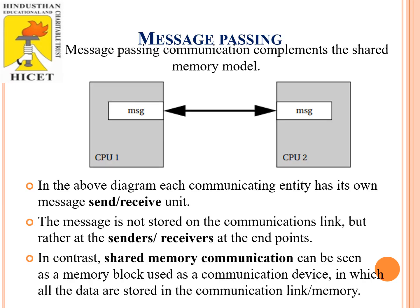Coming to the next style, that is message passing. Here, the communication complements the shared memory model. There are two different processes, process one and process two, with no intermediate between them — that is, there is no standard shared location. The proper message model is implemented on the processor itself, with two different units: a send unit and a receive unit. The message is not stored on the communication link but rather at the sender and receiver endpoints. In contrast to shared memory communication, which uses a memory block as a communication device where all data are stored in the communication link on memory.